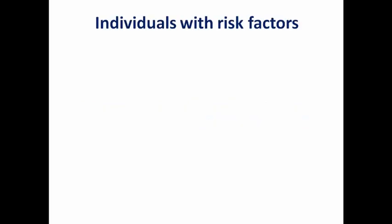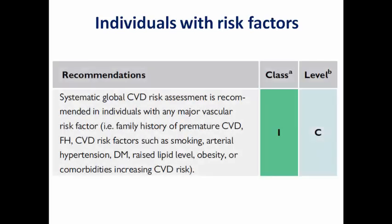So, screening is for whom? The task force this year concluded that systematic screening for cardiovascular risk is a Class 1 indication in any individual with one or more major vascular risk factors, such as family history of premature cardiovascular disease, familial hyperlipidemia, or cardiovascular risk factors like smoking, hypertension, diabetes, raised lipid levels, obesity, or other comorbidities that can be considered as risk modifiers.